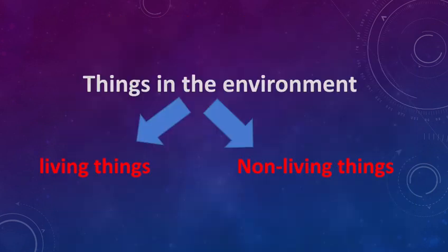Now, look at this. Things in the environment can be divided into living things and non-living things. Why children? Why do we group these things into living and non-living things? Because living things, they grow.